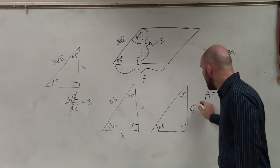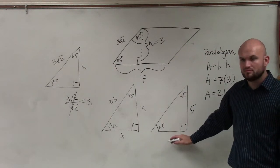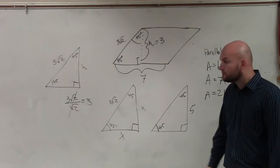Let's say I said this was 5. Then this leg has to be 5. And this would be 5 square root of 2. Okay?